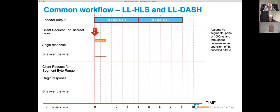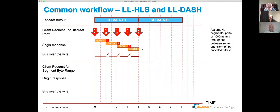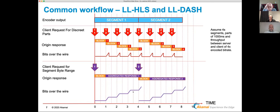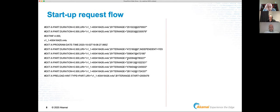A conventionally addressed LL-HLS player will request segment one, part one — the origin blocks until part one is ready, then bursts it at wire speed. A byte range addressed client requests segment one; the origin still blocks for the part duration, then begins an aggregated response bursting data at the same time as in the discrete case, and continues to burst subsequent parts — the same behavior that serves both HLS and DASH clients.